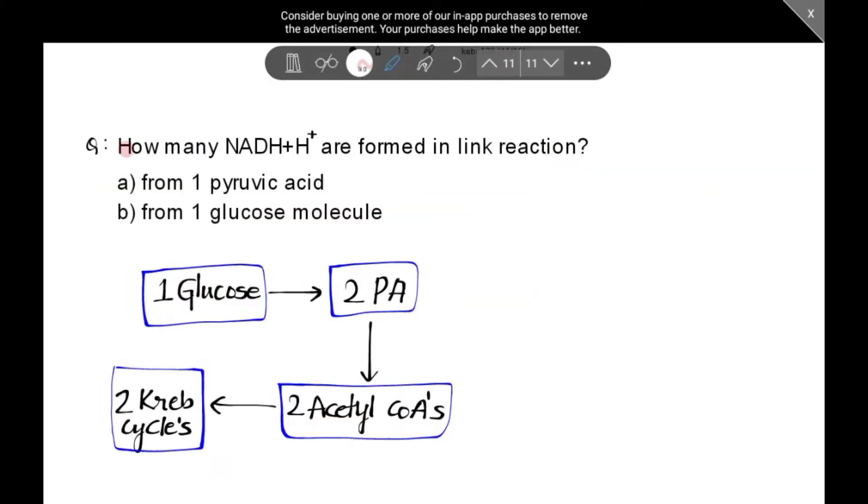Now, we will see a question. How many NADH + H⁺ are formed in the link reaction? First, from 1 pyruvic acid. Just now, we have seen the link reaction. It is 1 NADH + H⁺. If they ask from 1 glucose molecule, it means once glycolysis has taken place. So, in glycolysis, we get 2 pyruvic acids. So, in the link reaction, 2 pyruvic acids convert to 2 acetyl coenzymes A, releasing 2 NADH + H⁺. So, the answer is 2.